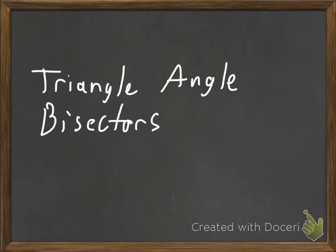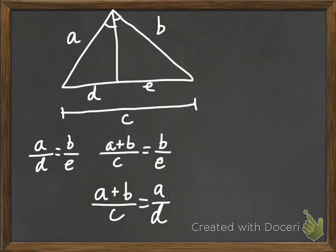Alright, welcome to a video on triangle angle bisectors. It's an angle bisector, so you can tell from the words that it's something that bisects an angle. So here we see our angle bisector is this segment right here. It cuts this angle up here in half. And when this happens, you get some interesting proportions that come out of that that we can solve.